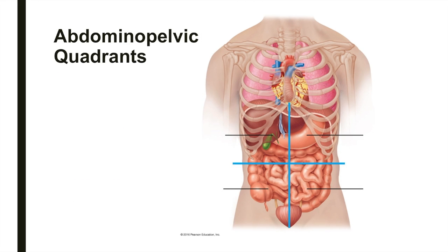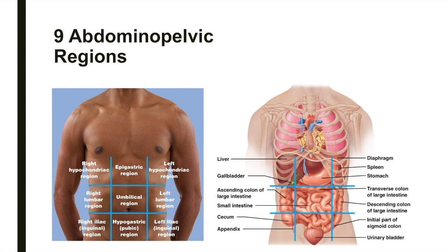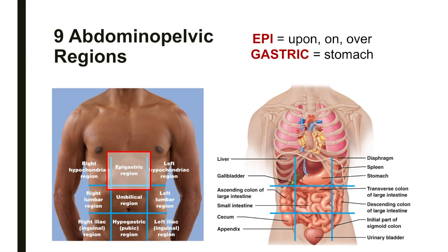The abdominal pelvic cavity is divided into smaller quadrants and regions for more efficient description and study by medical professionals. The four quadrants are named according to their relative position: right upper quadrant, right lower quadrant, left upper quadrant, and left lower quadrant. Remember that when using anatomical terminology, we are doing so from the patient's perspective. The abdominal pelvic cavity is also divided into nine separate regions for even more accurate description. For example, the epigastric region lies above the stomach — epi means upon, on, or over, and gastric refers to the stomach.